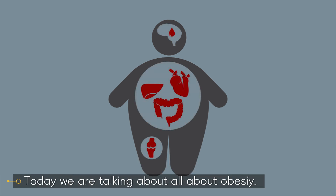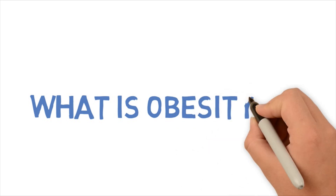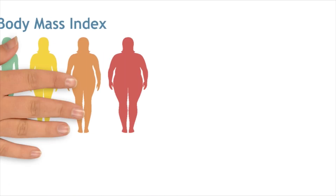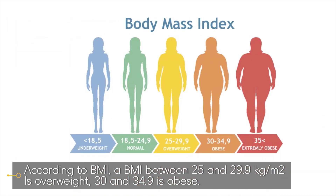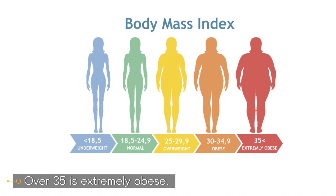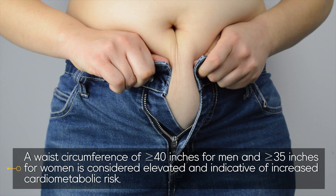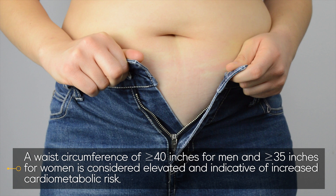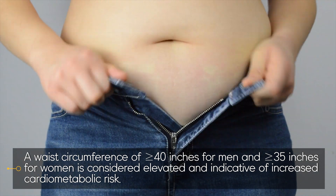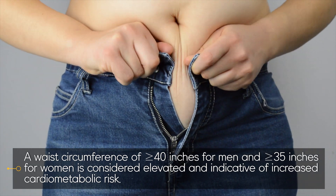Today we are talking all about obesity. What is obesity? Obesity is excess weight or body fat. According to BMI, a BMI between 25 and 29.9 kilograms per square meter is overweight; 30 to 34.9 is obese; over 35 is extremely obese. A waist circumference of greater than or equal to 40 inches for men and 35 inches for women is considered elevated and indicative of increased cardiometabolic risk.